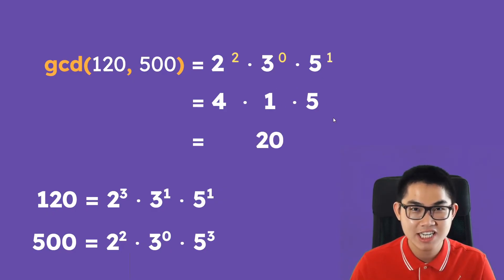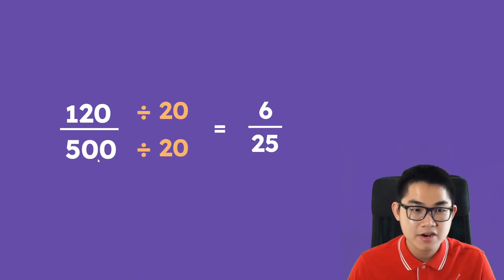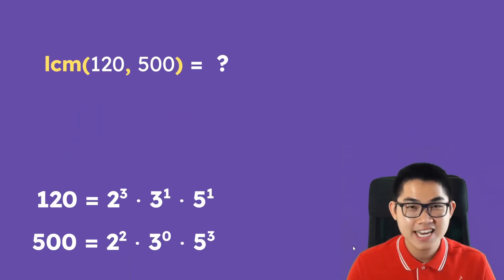So this is the GCD of 120 and 500. The GCD is very useful when it comes to simplifying fractions. So let's say we have 120 over 500, we find the GCD which is 20, so we divide the numerator by 20, the denominator by 20, and you have 6 over 25, and this is the simplified fraction.